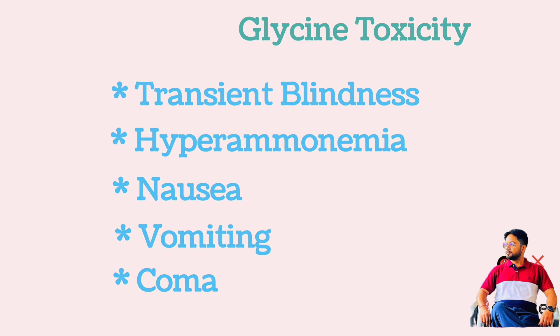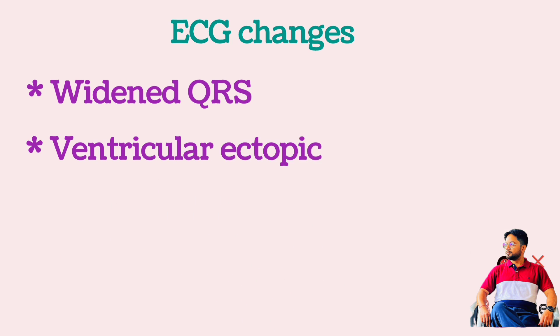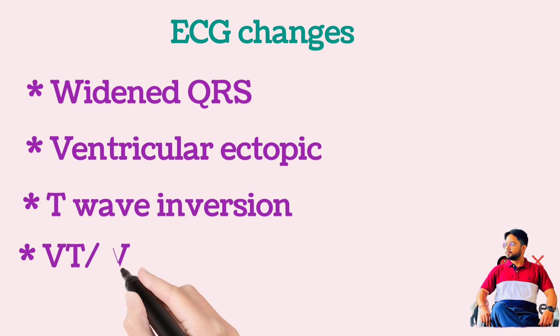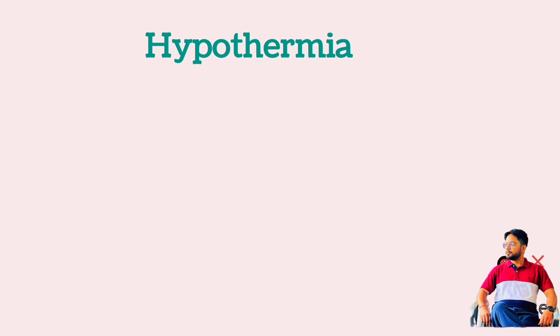ECG changes include widened QRS, ventricular ectopics, and inverted T/U waves. In severe cases there may be development of VT or VF. Hypothermia may also occur.